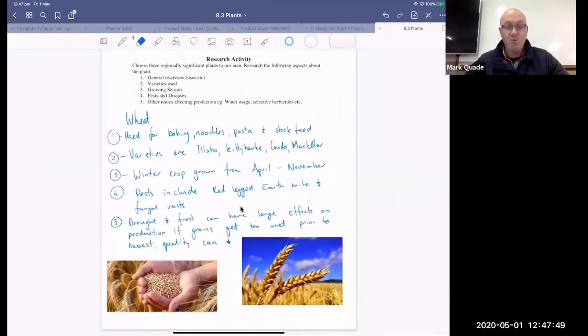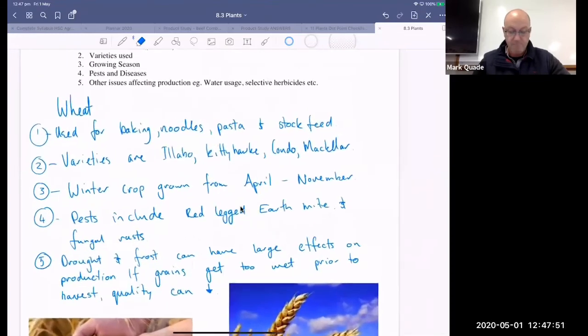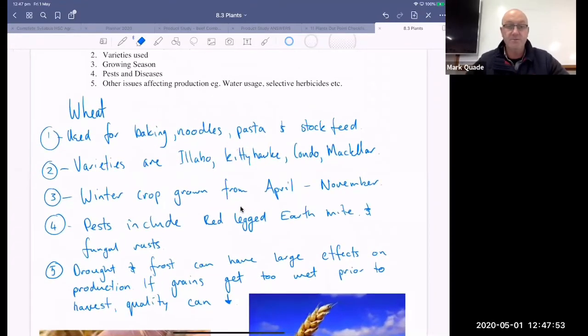So I've done wheat. So we've got our uses, baking, noodles, pasta, and stock feed. We've got some varieties. So I've Googled these varieties. They change all the time. So a lot of the first one I would have put down 20 years ago would have been H40. The biggest ones that we've got at the moment are probably McKellar, sorry, Kittyhawk, Illabo. Interesting. So Illabo and Condo, they're based off regions.